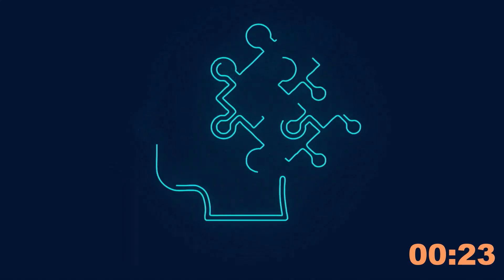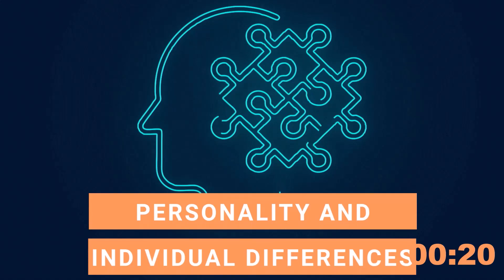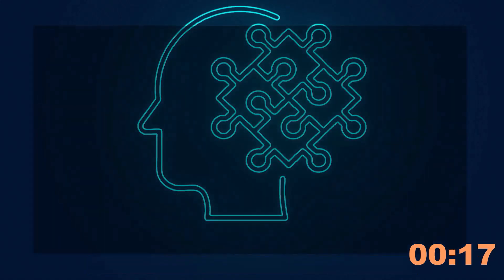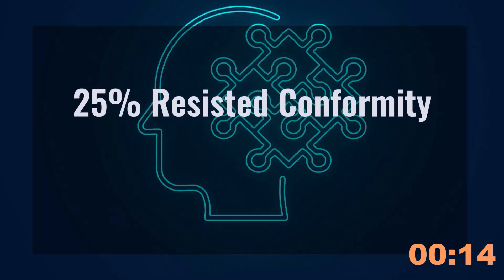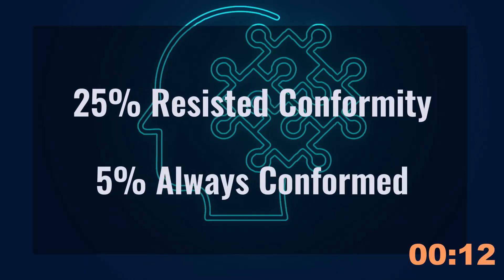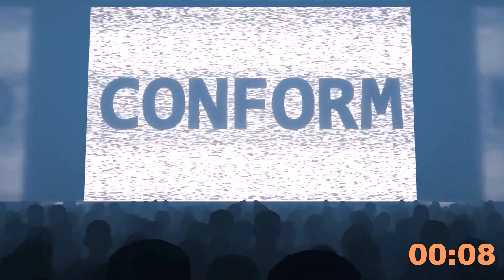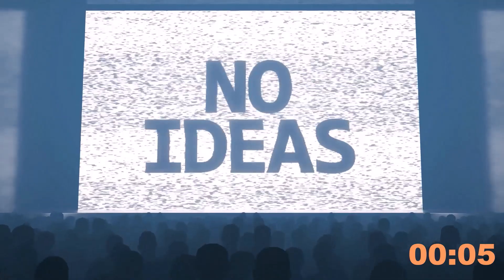However, significant variation also exists within these studies, highlighting the role of personality and individual differences. For instance, in Asch's original experiment, 25% of participants consistently resisted conformity, while 5% conformed in every trial. Therefore, there are both situational and personal factors that affect our tendency to conform to those around us.